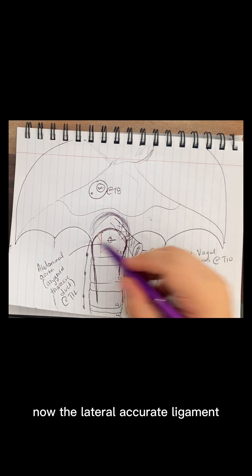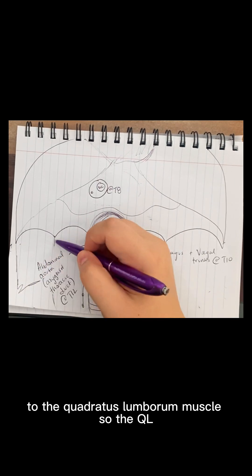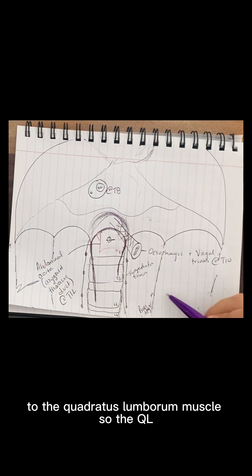Now, the lateral arcuate ligament is going to be superficial to the quadratus lumborum muscle, so the QL.